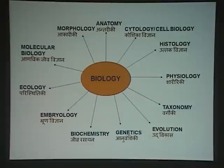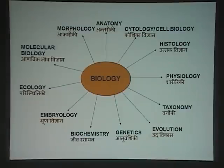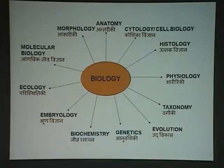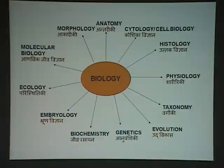At first, what we do? At first, we identify an organism. The first process in classification or in taxonomy is identification. And after identification comes naming, and then categorization or classification. The final process is classification. So at first: identification.